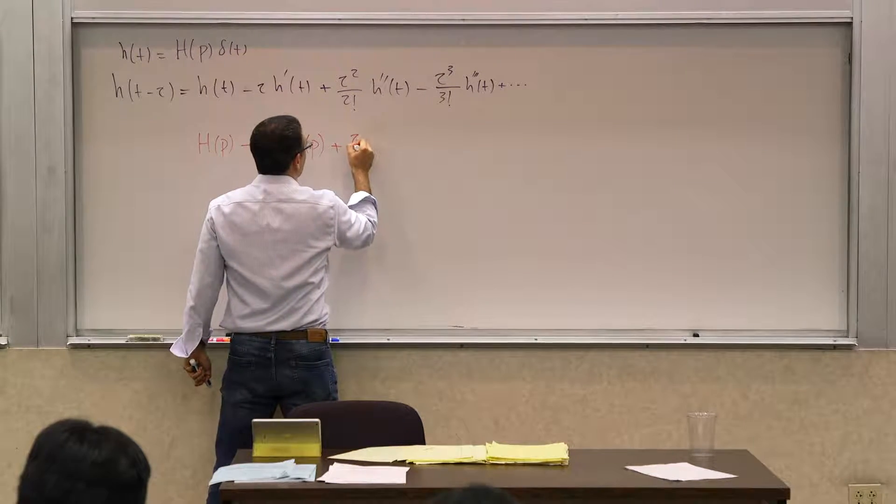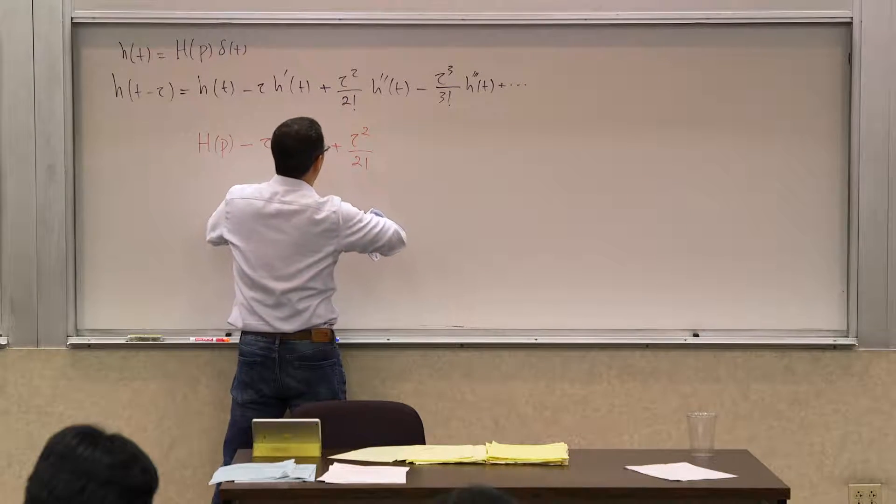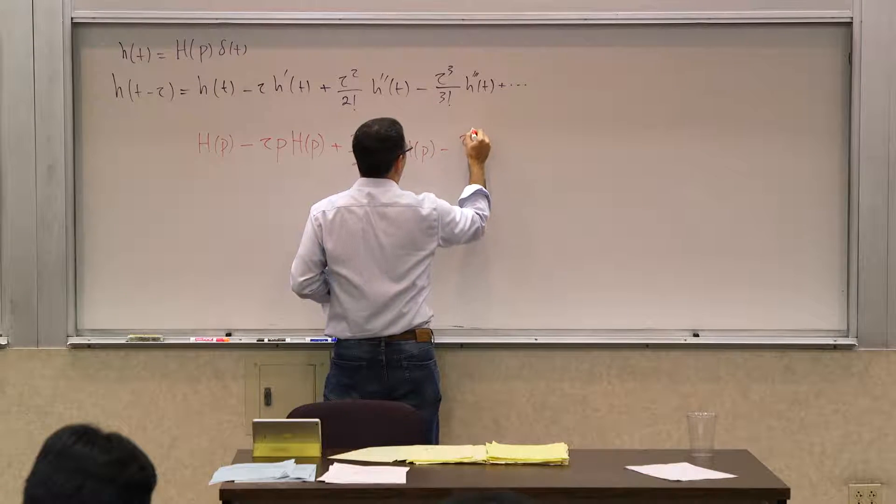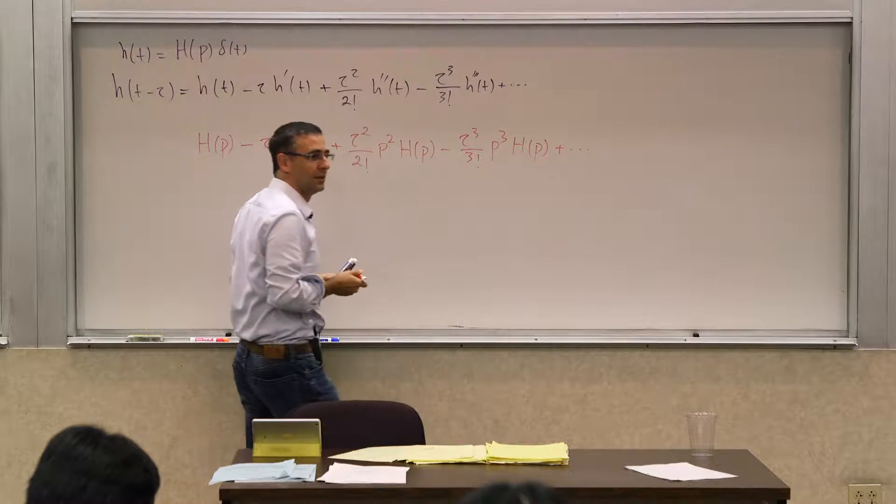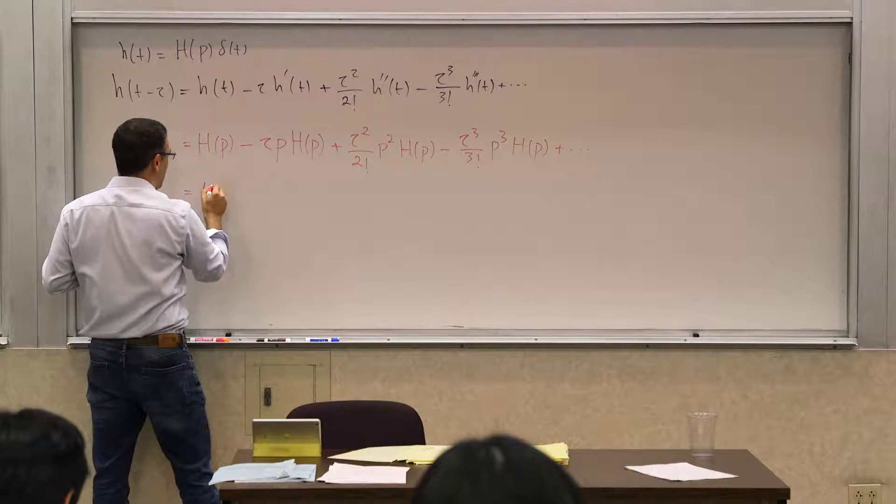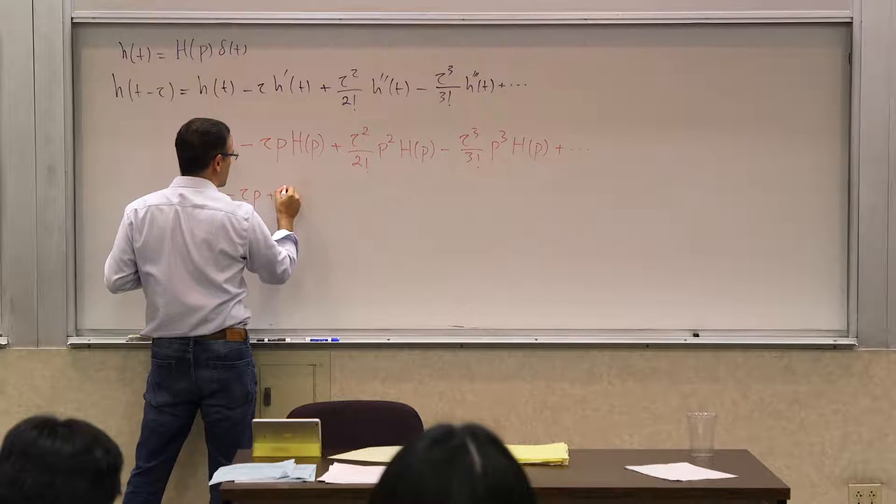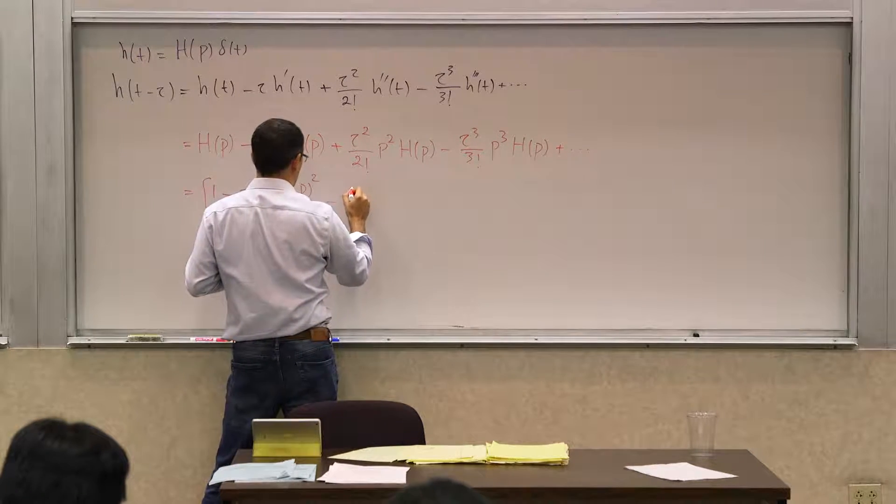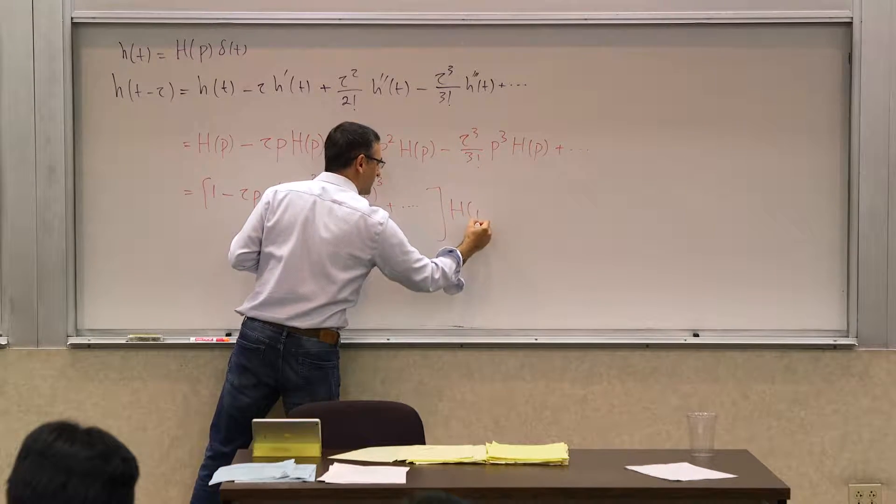And the next term is tau squared over 2 factorial, p squared h of p would be minus tau cubed over 3 factorial, p cubed h of p, and so on and so forth. So what you see here is that actually you can write this whole thing as h of p, or rather, 1 minus tau p plus tau p squared over 2 factorial minus tau p cubed over 3 factorial, h of p.